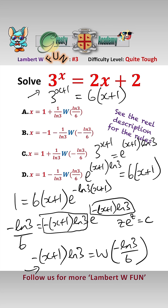And making x now the subject of this equation, gives us that x equals minus 1 minus 1 over log 3, w minus log 3 over 6, which is answer B.